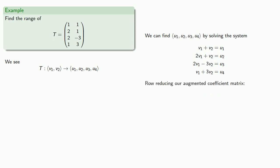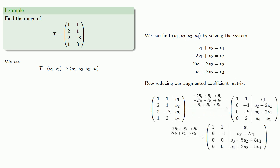If we row reduce our augmented coefficient matrix, notice we end up with two rows of zeros. So if there's any hope of this system being solvable, we'll need both of these expressions to be equal to zero. And so our range is going to require that U1, U2, U3, U4 satisfy this system of linear equations.